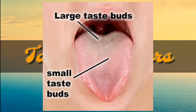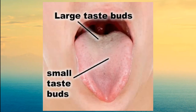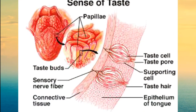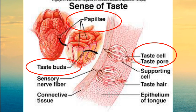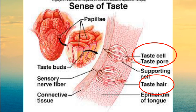Taste receptors. The surface of your tongue is covered with tiny bumps called papillae. Some of these contain taste buds made up of taste cells that have tiny taste hairs. These hairs detect chemicals in food and your brain tells you the flavor.